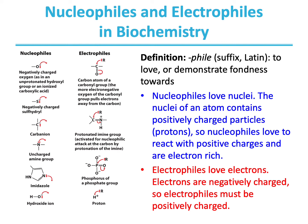Electrophiles, on the other hand, love electrons. Since electrons are negatively charged, electrophiles must be positively charged or electron-poor. Common electrophiles in biochemical reactions include: the carbonyl group, where the carbon atom is electrophilic; a protonated imine group, where the carbon is activated for nucleophilic attack; the phosphorus of a phosphate group, which is electrophilic; and a proton.